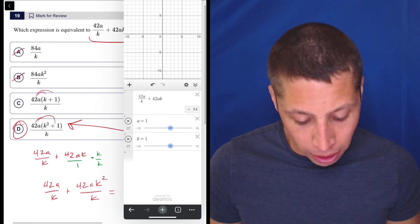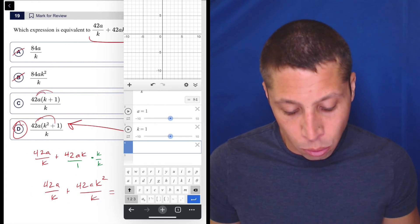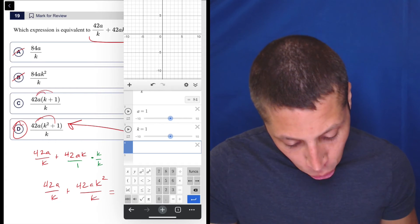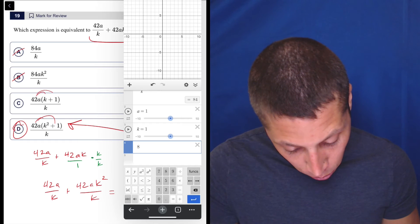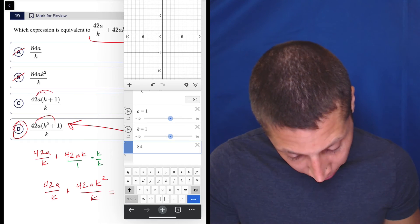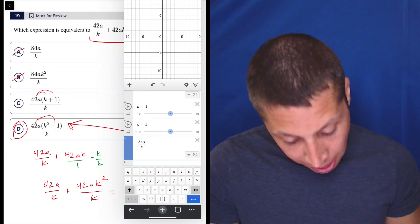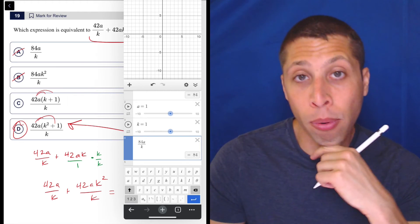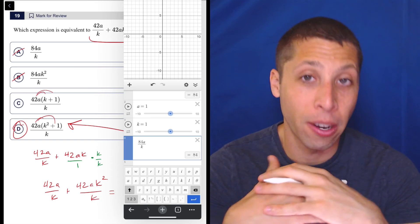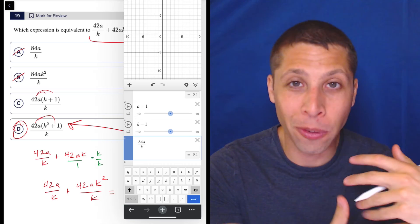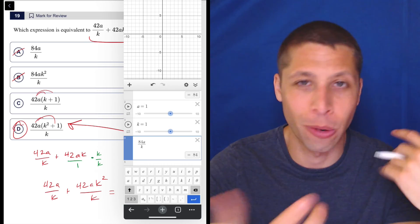So what I would need to do at this point is start putting the answer choices in as well. It's going to use the exact same values of a and k, but look, if I do that with choice a, that's 84a divided by k. That also gives me 84, and this is the problem. This is if I had arithmetized the simplest numbers, I would have gotten the same thing over and over again because they kind of just structured the question that way.